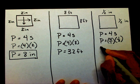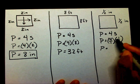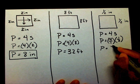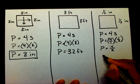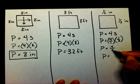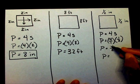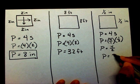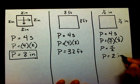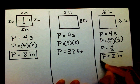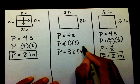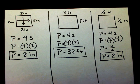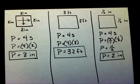Now I just need to multiply across: four times one is four, one times two is two. We know that four over two is an improper fraction, and four divided by two is two inches. So the perimeter is two inches.